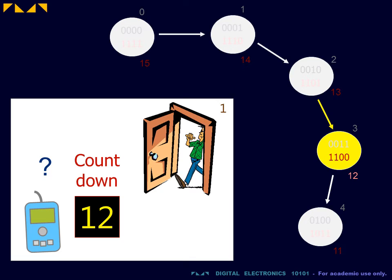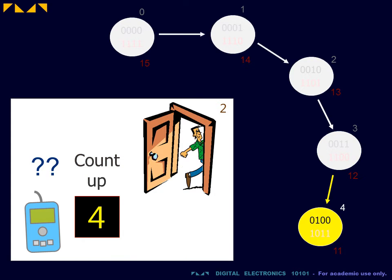Things become curious, however, when someone then leaves the room. The counter will still advance one state, but now we will read the count down value, which is indeed 12. If then again someone enters the room, the counter will again advance by 1, and we'll now read the count up value, which is incorrectly 4.